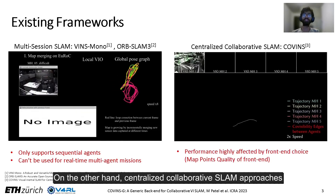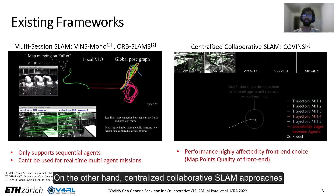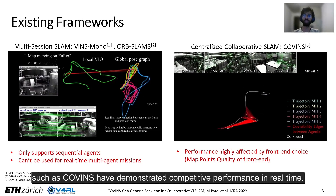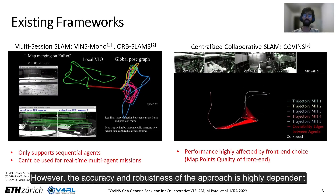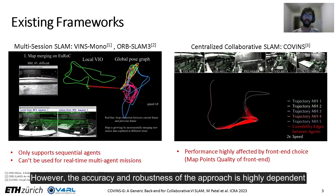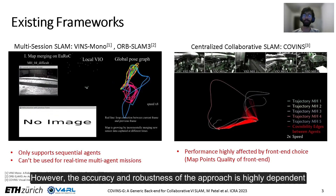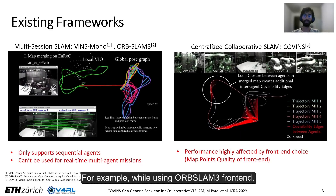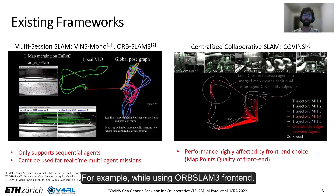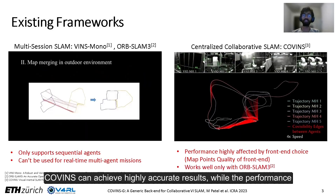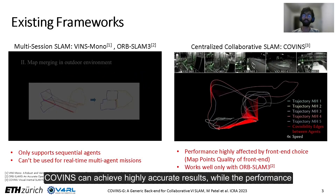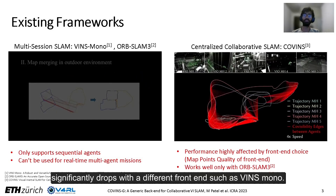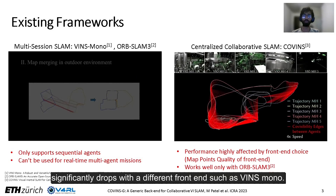On the other hand, centralized collaborative SLAM approaches such as Covins have demonstrated competitive performance in real-time. However, the accuracy and robustness of the approach is highly dependent on the map point quality provided by the frontend. For example, while using ORB-SLAM 3 frontend, Covins can achieve highly accurate results, while the performance significantly drops with a different frontend such as VINS-Mono.